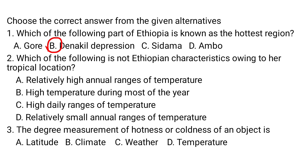The Danakil Depression is the warmest and hottest region, classified into the Bereha or desert agroecological zone. Question number two: which of the following is NOT an Ethiopian climate characteristic owing to its tropical location? A) Relatively high annual ranges of temperature, B) high temperatures during most of the year, C) high daily ranges of temperature, D) relatively small annual ranges of temperature. The daily range of temperature means the difference between the daily maximum and the daily minimum temperature, whereas the annual range of temperature means the difference between the hottest and coldest months.